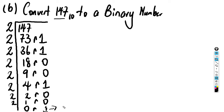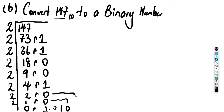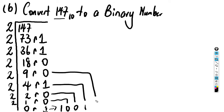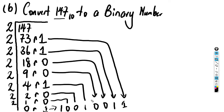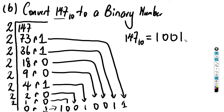So let's write this out. Reading the remainders from bottom up we're going to end up with one, zero, zero, one, zero, zero, one, one. That means that 147 to the base 10 is actually equal to 10010011 to the base two.